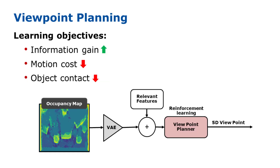For viewpoint planning, we trained a reinforcement learning agent. It uses the current map's latent space and other relevant features as observation, such as the last viewpoint and the center of the largest unknown area, and outputs the next 5D viewpoint position as action. Our reward system is kept as simple as possible for ease of training. The continuous reward consists of two parts: a weighted motion cost, promoting efficient viewpoints, and a weighted information gain to favor views that minimize uncertainty.